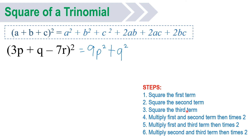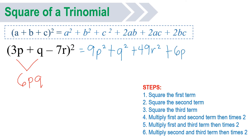Third step: square the third term. We have negative 7r. Negative 7 times negative 7, that will be positive 49. Then r times r is r squared. Fourth step: multiply the first and second term. So 3p times q, then times 2. So 3 times 2, that will be 6, giving us positive 6pq.